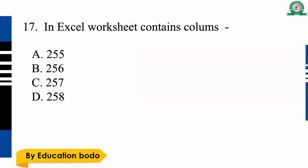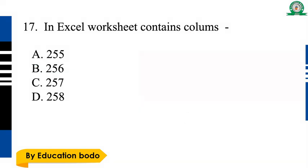Question number seventeen: In Excel, worksheets contain how many columns? Option B is the right answer — 256 columns in Excel. Option B is the right answer.